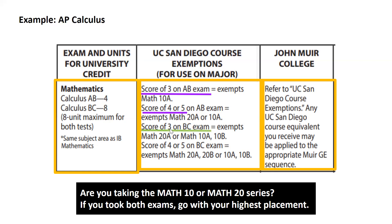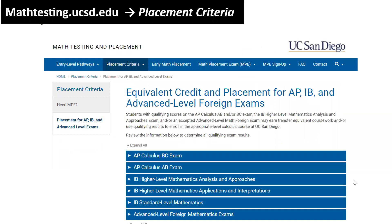A score of 3 on the Calculus BC exam will exempt you from Math 20A or Math 10A plus Math 10B. So, if you are pursuing the Math 10 series, take Math 10C; if you are pursuing the Math 20 series, take Math 20B. A score of 4 or 5 on the Calculus BC exam will exempt you from Math 20A, 20B or 10A, 10B. This means if you are pursuing the Math 10 series, take Math 10C; if you are pursuing the Math 20 series, take Math 20C. You can also go to mathtesting.ucsd.edu to learn more about your math placement with AP, IB, or A-level credit.